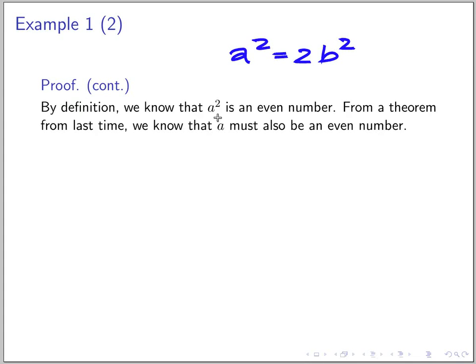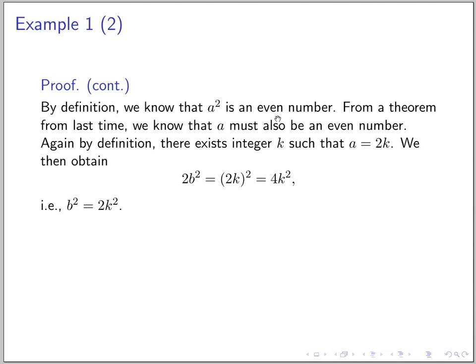We just had this that a squared equals two b squared. Now by definition a squared is an even number because b is an integer so b squared is also an integer so a squared equals two times some integers. That means that a squared is an even number and from the theorem that we proved last time this implies that a must also be an even number.